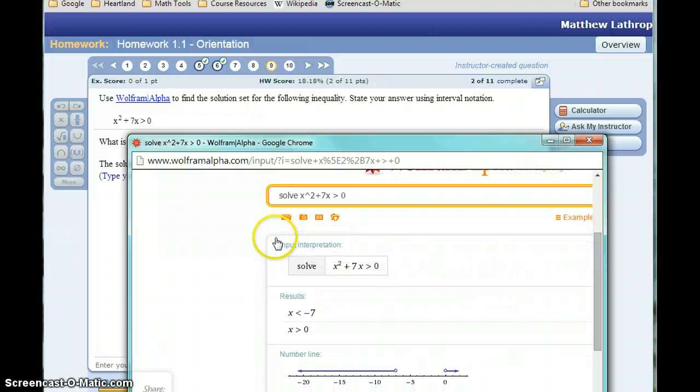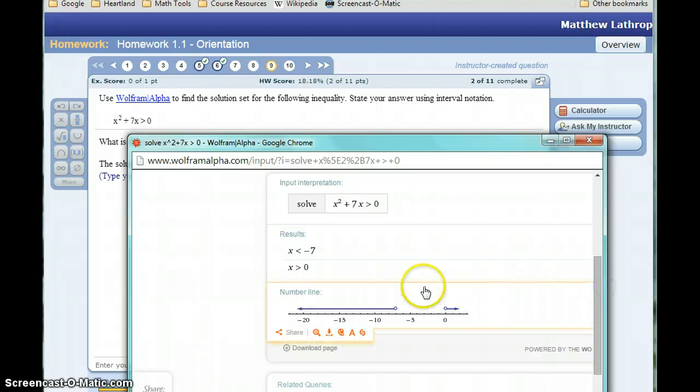There's always going to be this input interpretation step or box. It's always a good idea to double check that, make sure this matches what you think you should be doing, in case you have a typo or the software decided to interpret something differently. It's going to give us our results in a couple of different forms: as a number line and as a pair of inequalities. We can see that x should be less than negative 7, or x should be greater than 0.